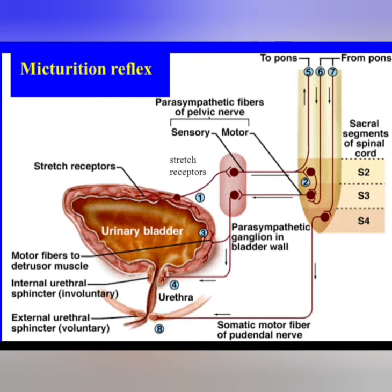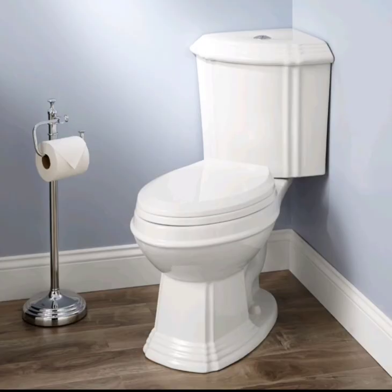If the brain says it's not okay to urinate, signals from the cerebrum excite the spinal interneurons and the external urethral sphincter stays contracted. When it then becomes okay to urinate, sacral neurons are inhibited by signals from the cerebrum. The external urethral sphincter then relaxes and urine is released.